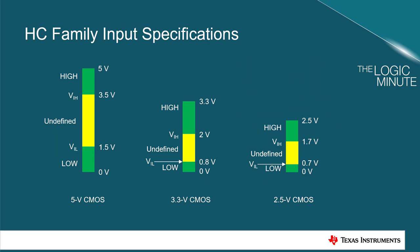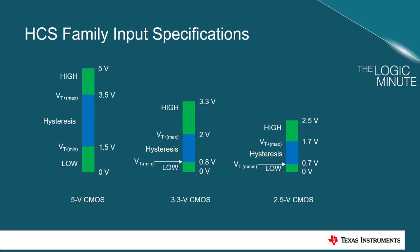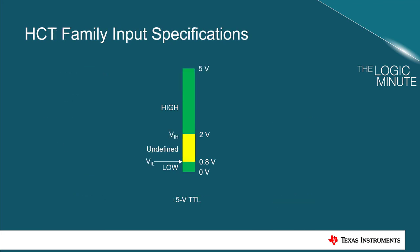HC family devices are defined to conform to standard CMOS input voltage levels. The HCS family includes hysteresis on all input pins while continuing to meet the same standard CMOS voltage level requirements. The HCT family is defined to operate at 5 volts and conform to TTL standards in order to maintain backwards compatibility with older logic.